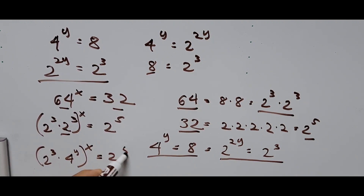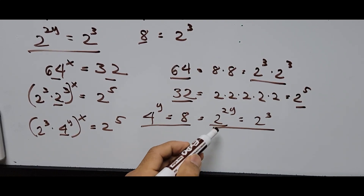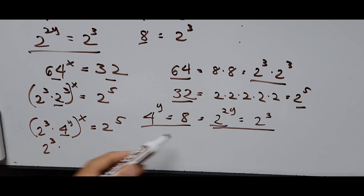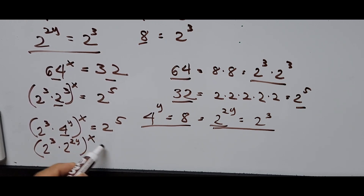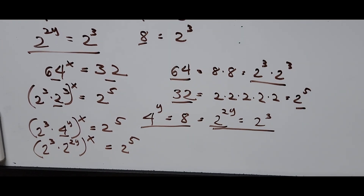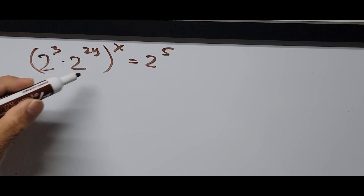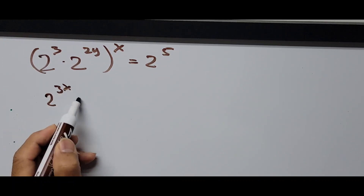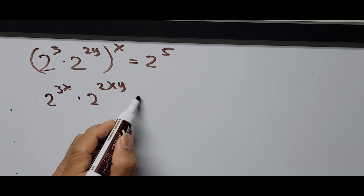Since 4 raised to the y power is the same as 2 to the 2y, we replace that: 2 raised to the 3rd power times 2 raised to 2y, all raised to the x power, equals 2 raised to the 5th power. We distribute the x so it becomes 2 raised to 3x times 2 raised to 2xy, equals 2 raised to the 5th power.